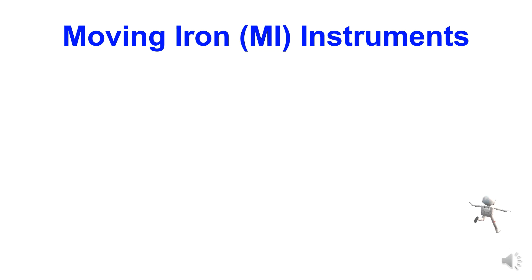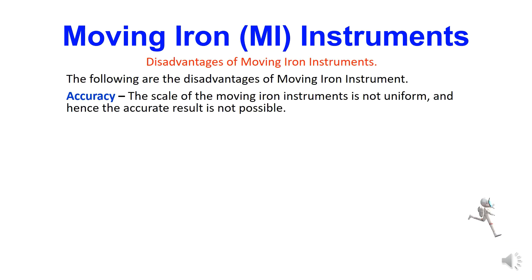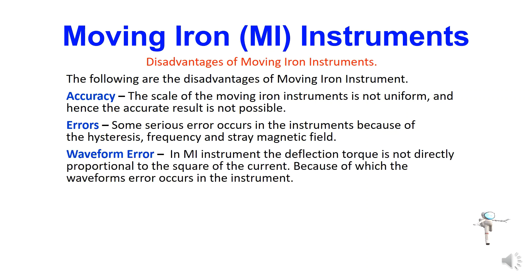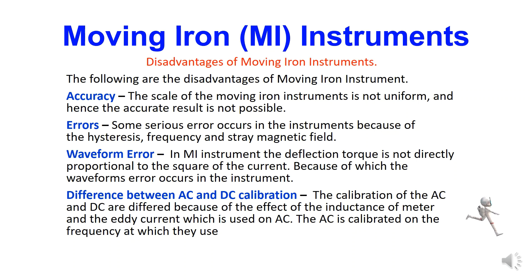Even though there are many advantages, there are some disadvantages. Accuracy — the scale of the moving iron instrument is not uniform and hence accurate results are not always possible; at the start you may see non-uniform scales. Errors — serious errors occur in the instrument because of stress, frequency, and stray magnetic field. Waveform errors — the deflection torque is not directly proportional to the square of the current, causing waveform errors. The difference between AC and DC calibration — the calibration of AC and DC differ because of the effect of inductance of the meter and the AC current frequency at which they are used.